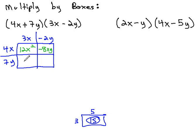In the bottom left, the headers are 7y times 3x is 21xy. In the final box, we have negative 2y times 7y, which is negative 14y squared.